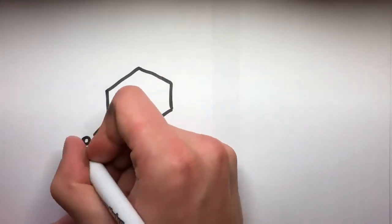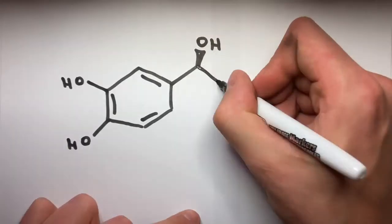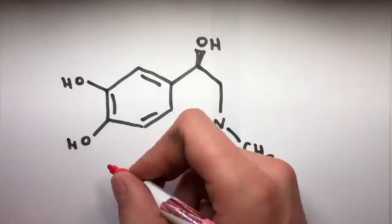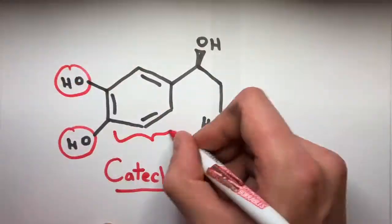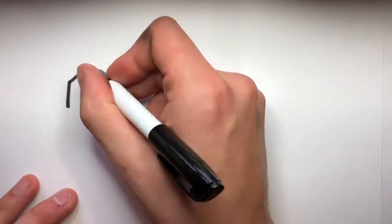Adrenaline was first synthesized in 1904 by Friedrich Stoltz. Its structure contains three hydroxyl groups, a benzene ring, and an amine group, and is within the class of molecules known as the catecholamines.